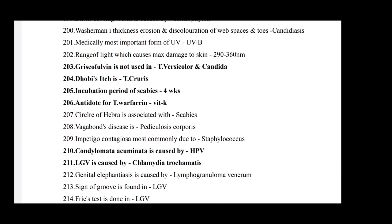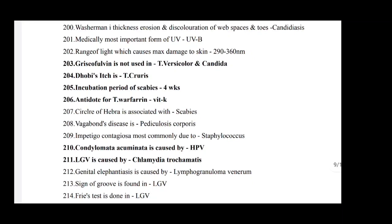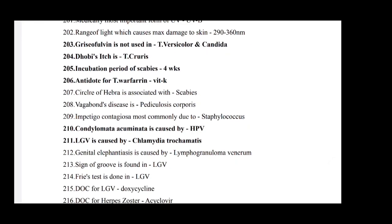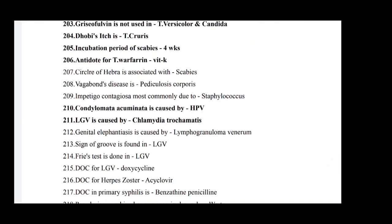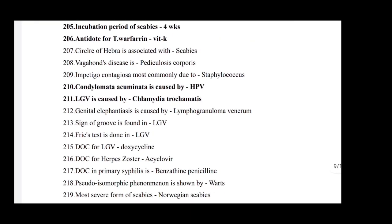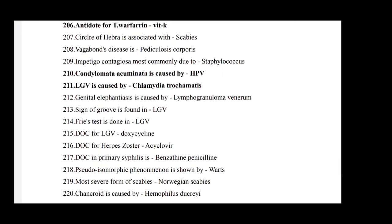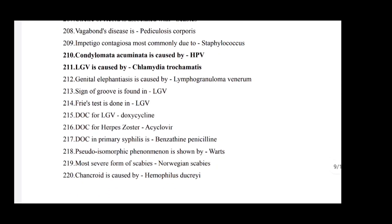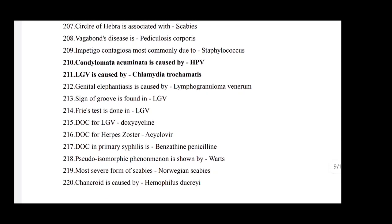Impetigo contagiosum is commonly due to Staphylococcus. Condyloma acuminata is caused by HPV (human papilloma virus). LGV is caused by Chlamydia trachomatis. Genital elephantiasis is caused by lymphogranuloma venereum. Sign of groove is found in LGV. Frei's test is done in LGV. Drug of choice for LGV is doxycycline. Drug of choice for herpes is acyclovir. Drug of choice in primary syphilis is benzathine penicillin.